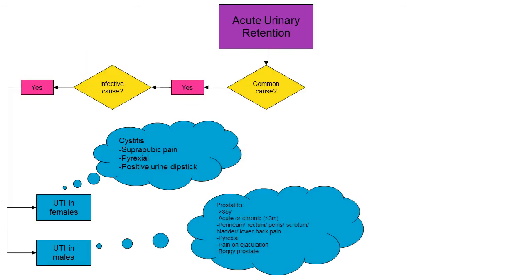On the flow diagram, is this a common cause? Yes. Is this an infective cause? Yes. We can look at UTIs in either female or male patients. In a female patient, you get suprapubic pain, it can be pyrexial, and you would have positive findings on a urine dip — this is called cystitis. In males, we may have prostatitis causing these symptoms.